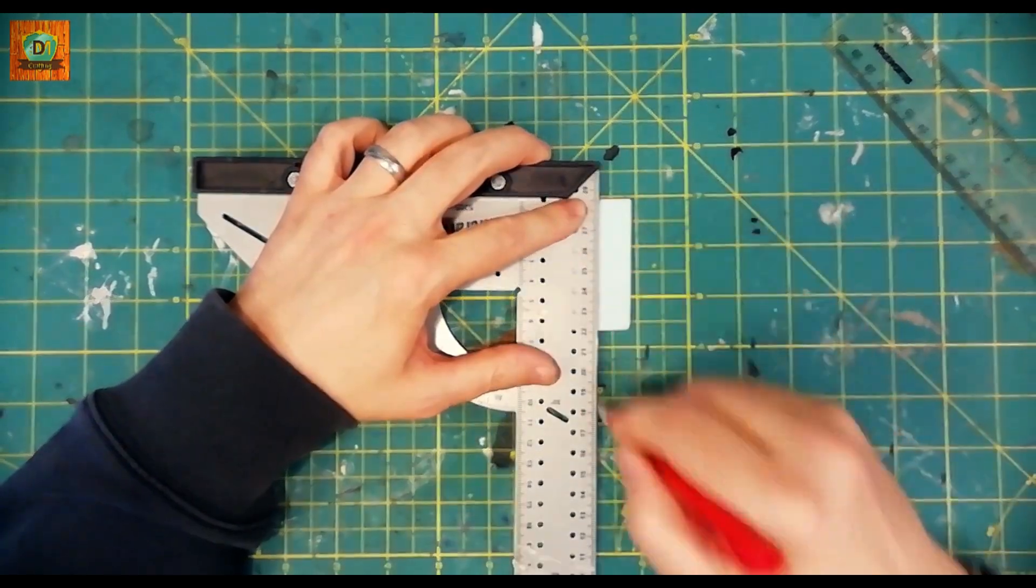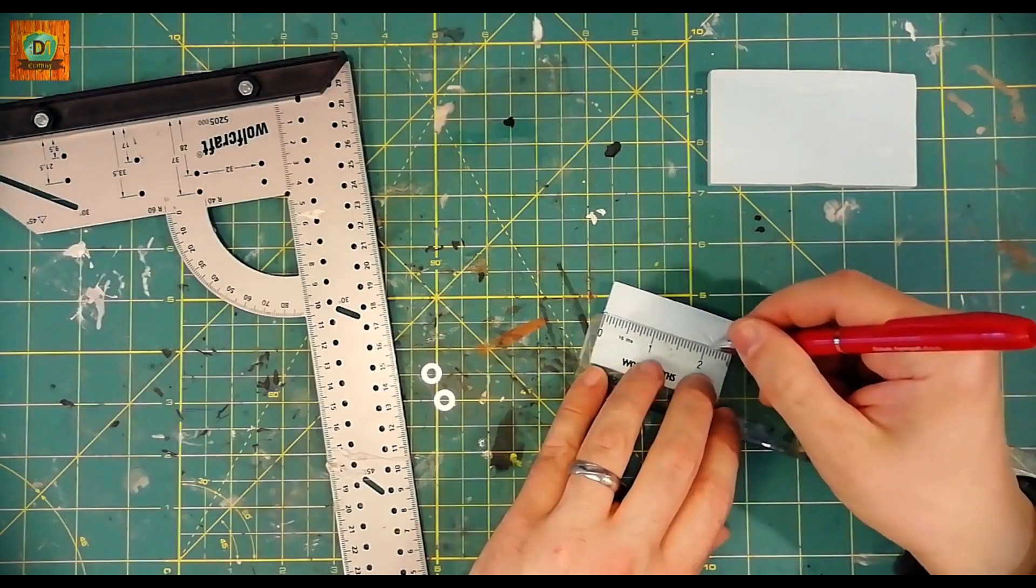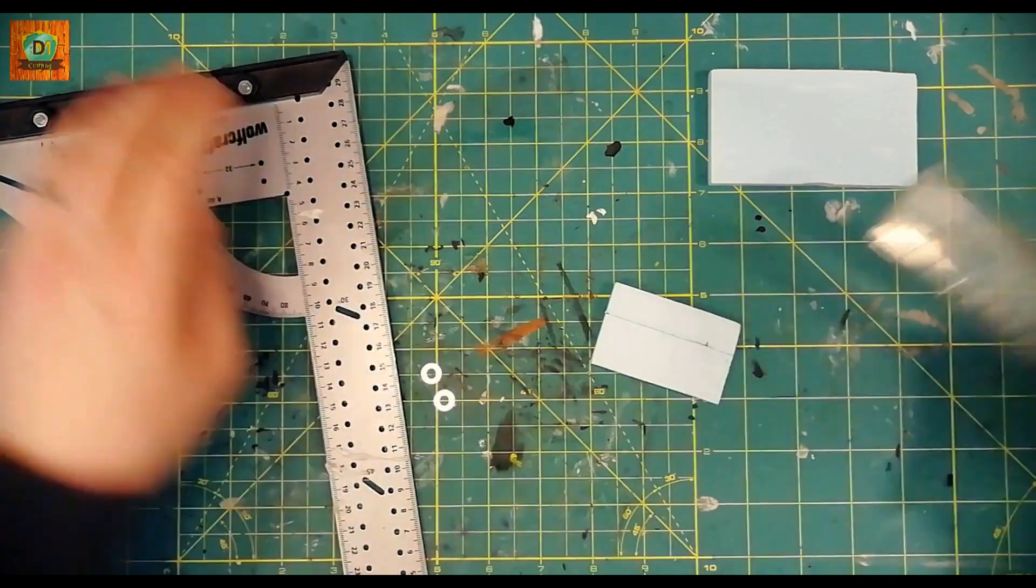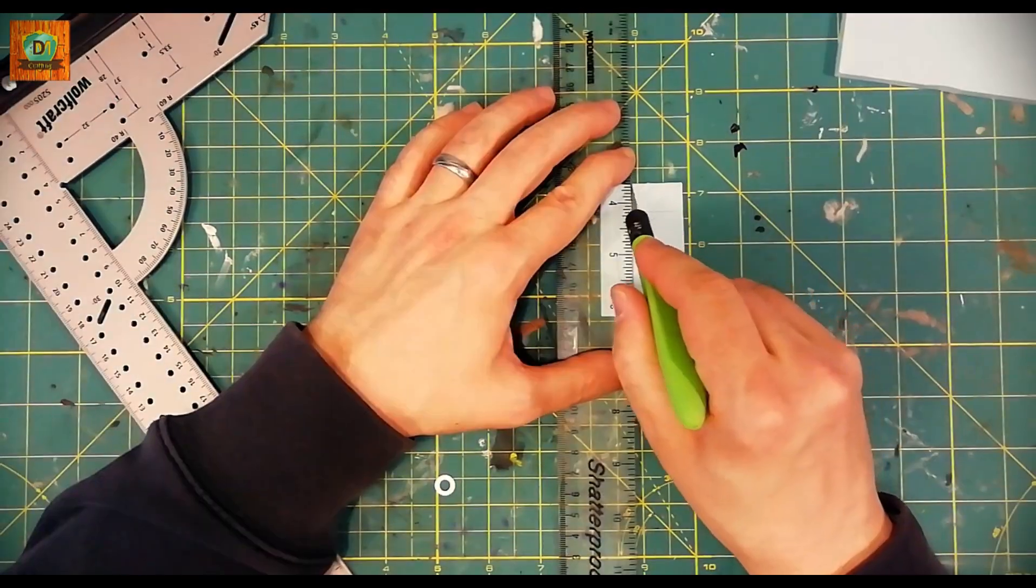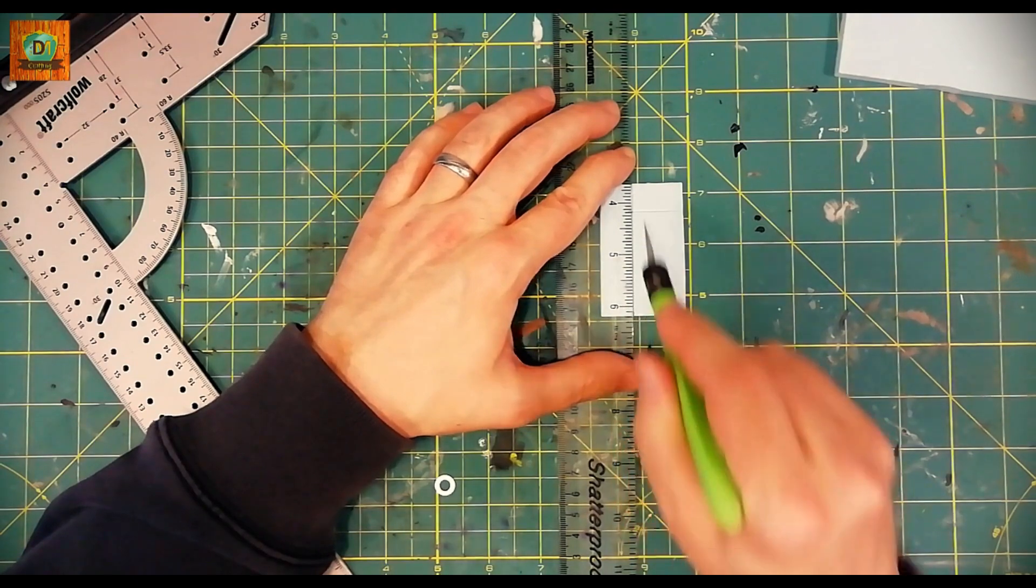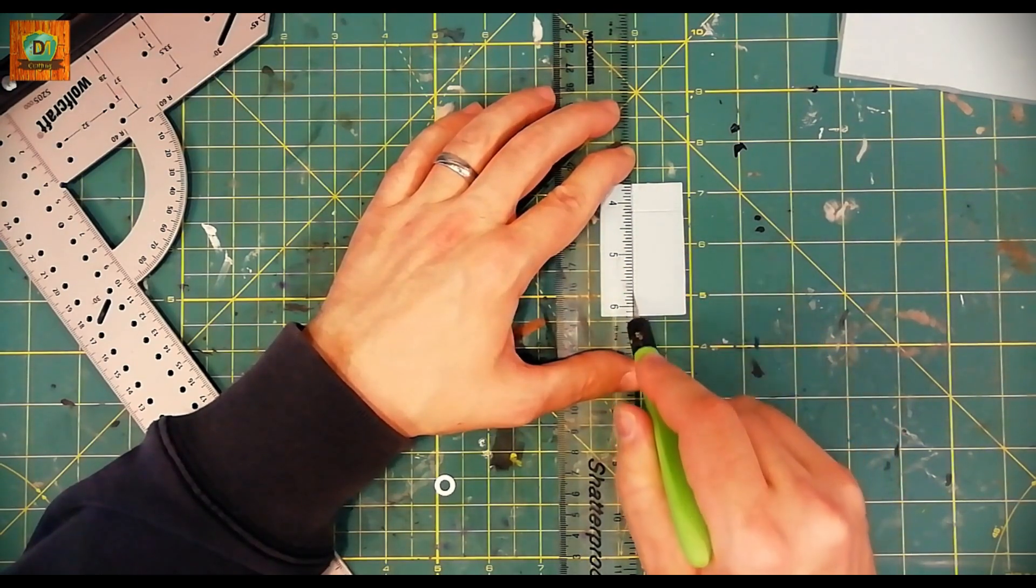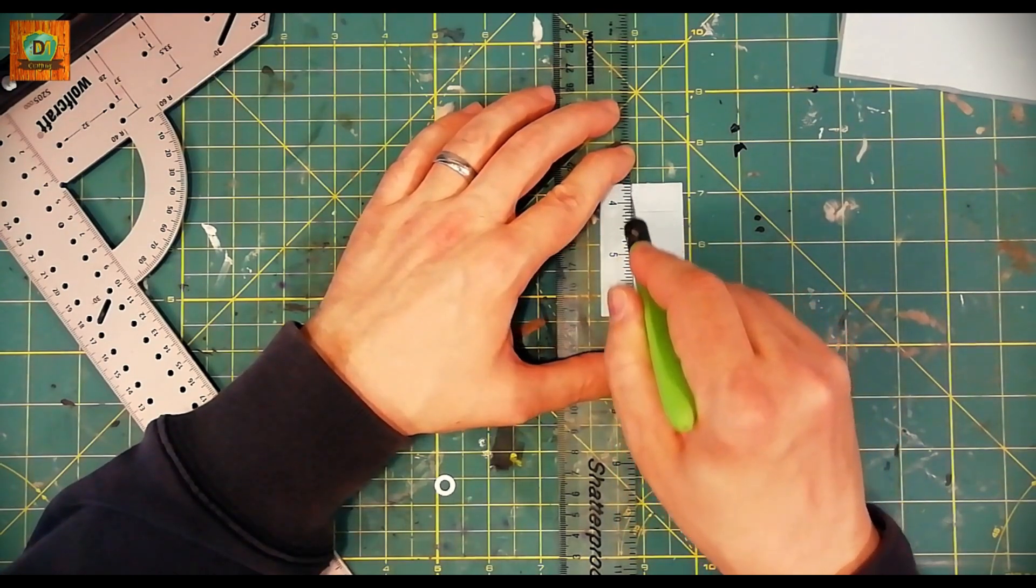Stay a while and listen. Here I'm taking a piece of foam, five millimeters thick, and I'm cutting it two inches by one inch because this will be the measure of our table. Always use a fresh blade for your X-Acto knife.